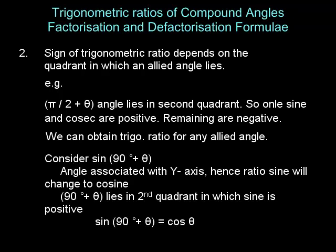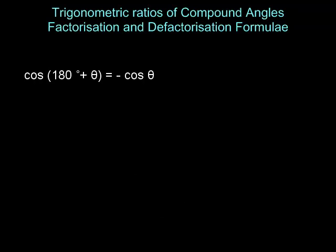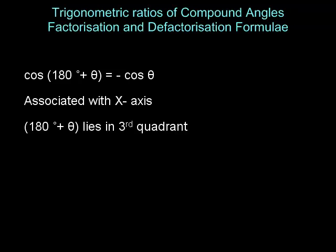For example, consider sine of 90 degrees plus theta. The angle is associated with the y-axis, so the ratio sine changes to cosine. Since 90 plus theta lies in the second quadrant, in which the sine ratio is positive, finally, sine of 90 plus theta is cos theta. Another example: cos of 180 degrees plus theta is minus cos theta. The reason is 180 degrees plus theta is associated with the x-axis, so the ratio does not change. Since 180 degrees plus theta lies in the third quadrant and cosine is negative there, cos of 180 degrees plus theta is minus cos theta.